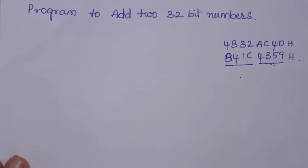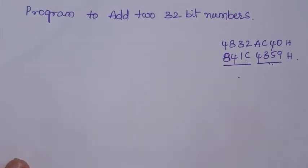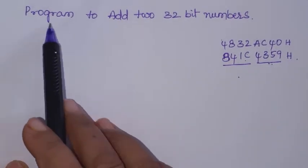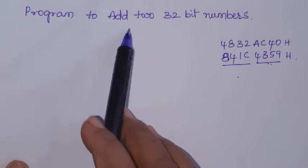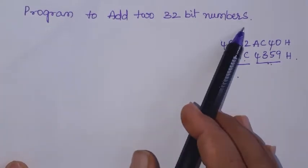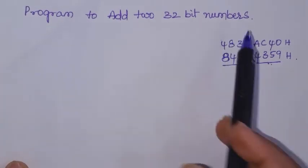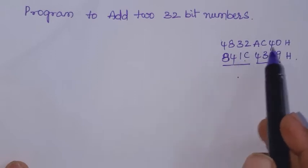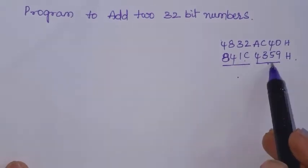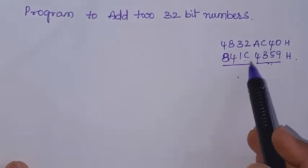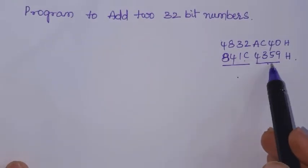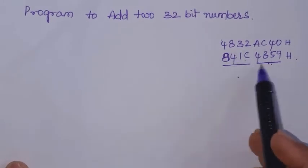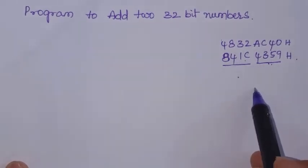Hello students. Let's see the program. Let's write the program to add two 32-bit numbers. For example, take these two 32-bit numbers. We want to add these two numbers — write a program to add these two numbers and give the result.